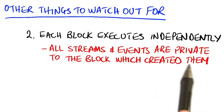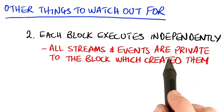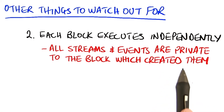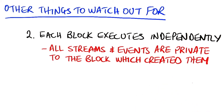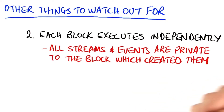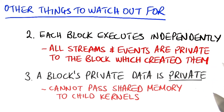That means you can synchronize on kernels launched from within your block, but you cannot synchronize on work launched by another block. You can't pass streams or events to your children and have them synchronize on it, or you risk a deadlock. This is all part of composability that we looked at a minute ago.